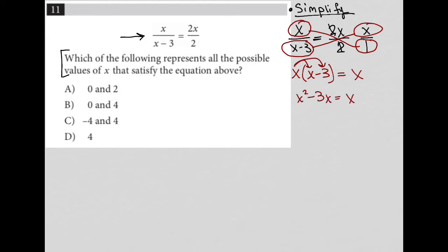I then see that I have like terms in my x terms here, so I can subtract x from both sides of the equation, leaving me with x² - 4x = 0. And lastly, I can factor out an x from the left-hand side, leaving me with x(x - 4) = 0.